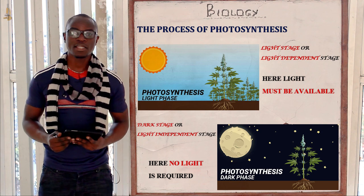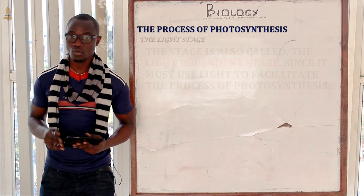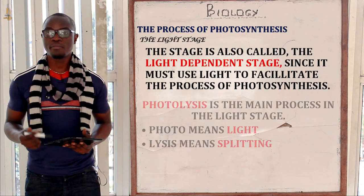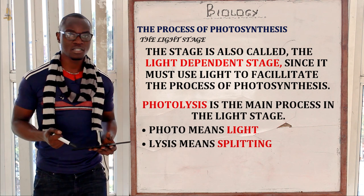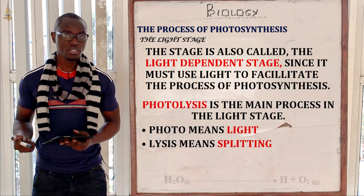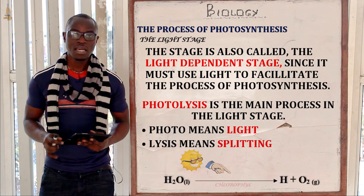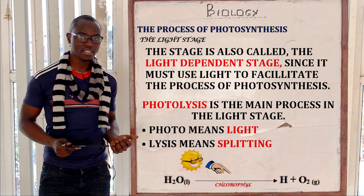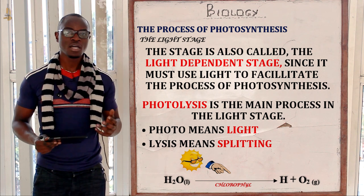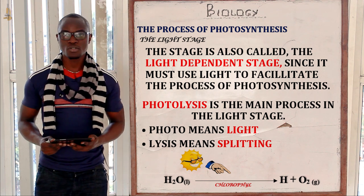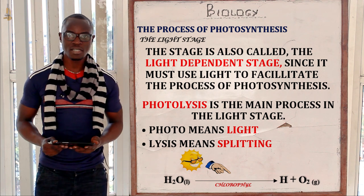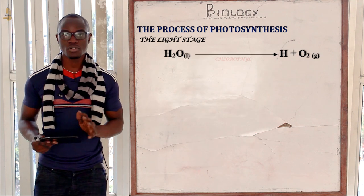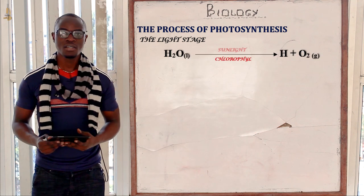Let's look at the light stage of photosynthesis. The main process in the light stage is photolysis. Photolysis is the process where sunlight breaks down water molecules into hydrogen atoms and oxygen gas. It must be hydrogen atoms, not hydrogen gas.